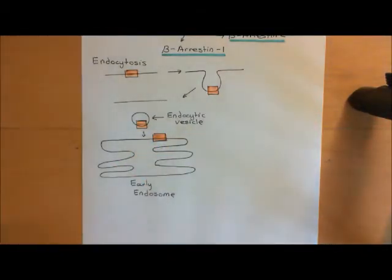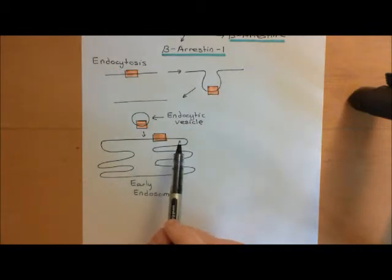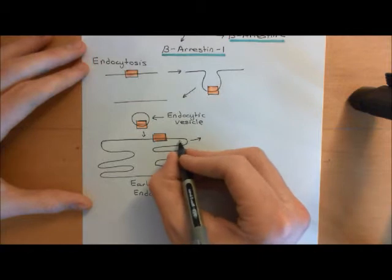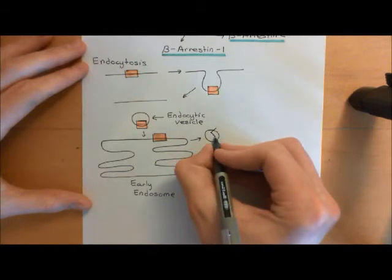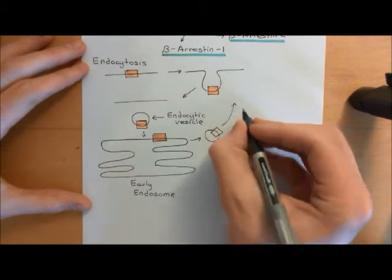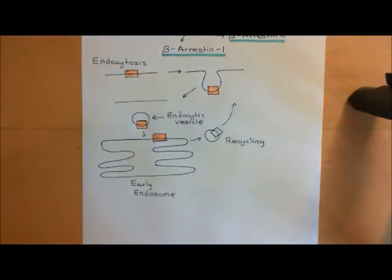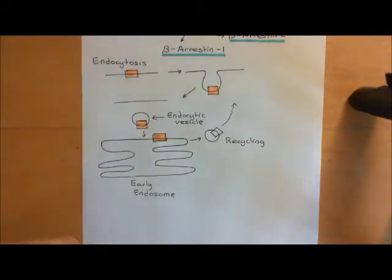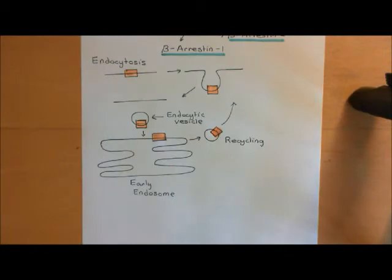If you later want to recycle the receptor back to the plasma membrane, little vesicles can pinch off from the tentacle structures of the early endosome and carry the receptor back to the plasma membrane — that's called recycling. The early endosome is basically a place where we can store these receptors away from the plasma membrane for a while, and then once the ligand has been removed from the extracellular fluid, we can return the G-protein-coupled receptor back to the cell membrane.